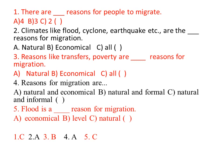Reasons like transfers and poverty are dash reasons for migration. Transfers, poverty — economical reasons. That is B. The third answer is B.